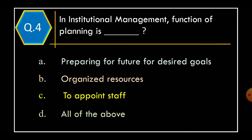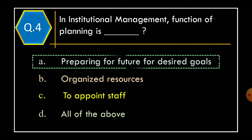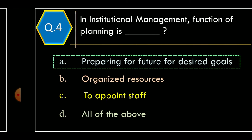Question 4. In institutional management, the function of planning is: Option A: Preparing for future for desired goals. Option B: Organized resources. Option C: To appoint staff. Option D: All of the above. The correct option is Option A: Preparing for future for desired goals.